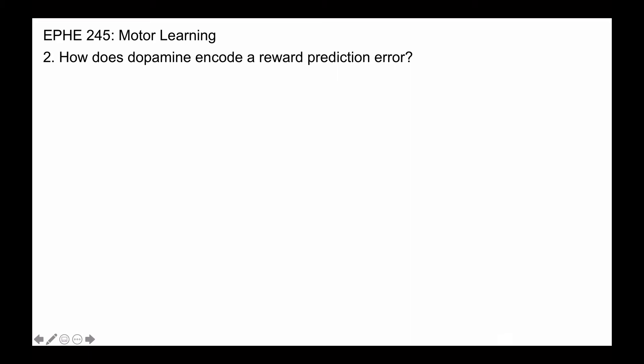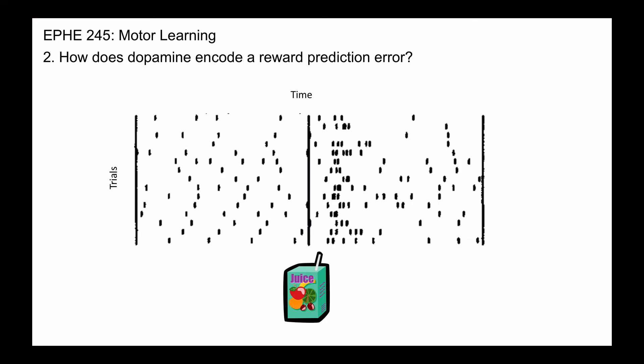How does dopamine encode a reward prediction error? Research by Wolfram Schultz and colleagues found that when monkeys received a reward, there was an increase in the firing rate of dopamine neurons.